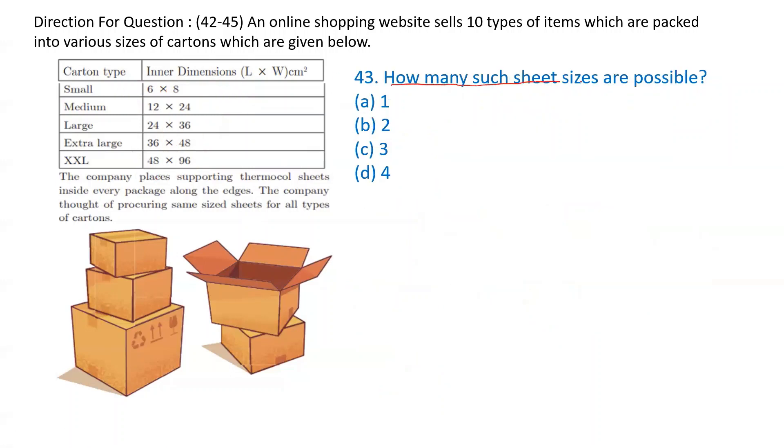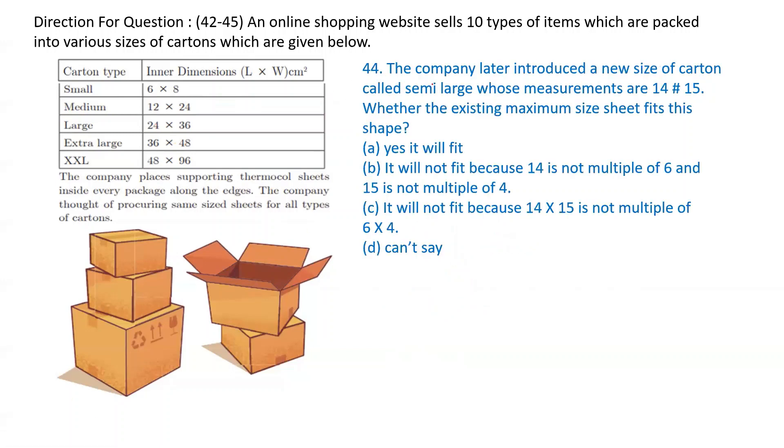Next question: How many such sheet sizes are possible? 6 by 4. It is only one. You are not getting more than that. If you get 12 by 8, then it may not be divisible by all. So it will be only one type of carton is possible.